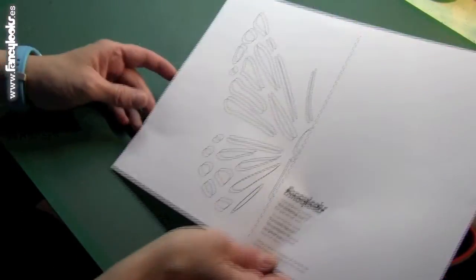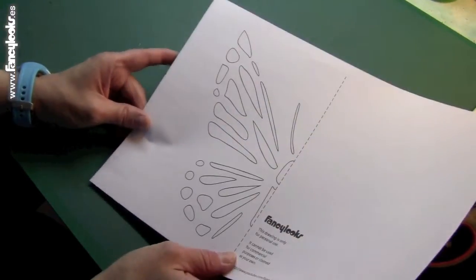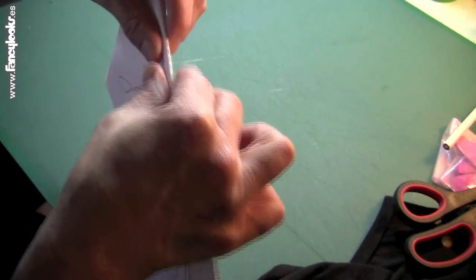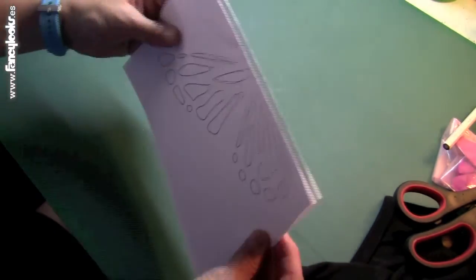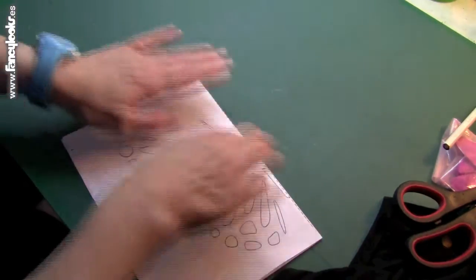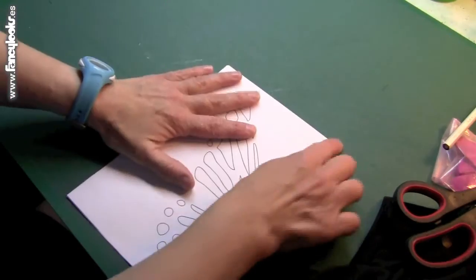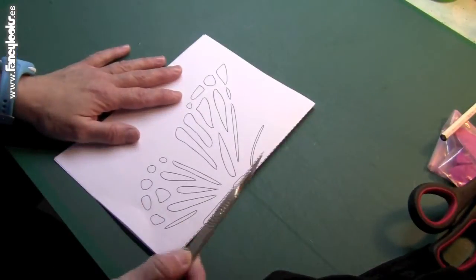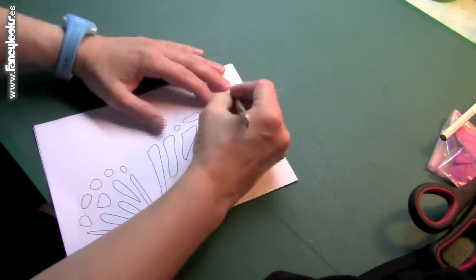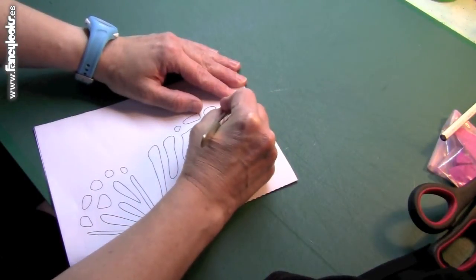Once you have downloaded your template, the next thing you need to do is to print it, fold it like this in the dot line. Because this way you will cut both wings of the butterfly at the same time. And then with a nice scalpel, I like to use this. You cut around the edges that I have traced in the drawing.